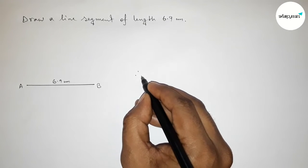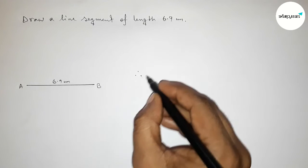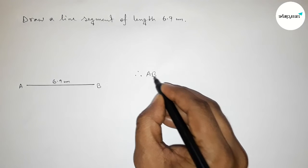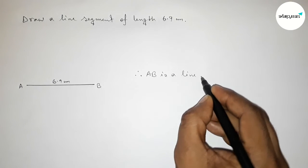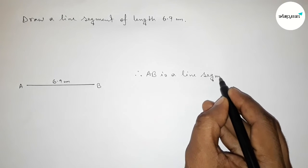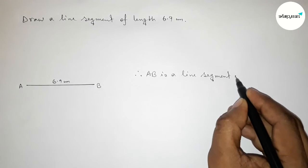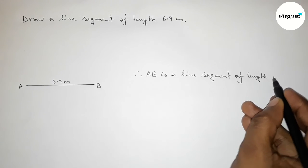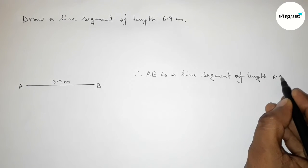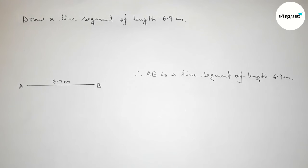Therefore we can say that AB is a line segment of length 6.9 centimeters. With the help of a scale you can draw this line this way. That's all — thanks for watching. If this video is helpful to you, please share it with your friends.